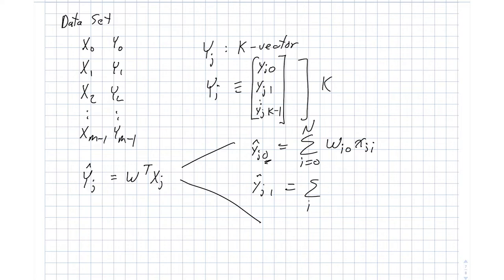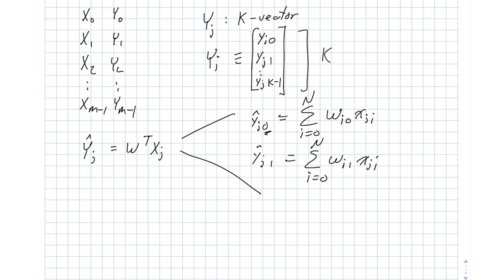And yj1 is a summation from 0 to n of wi1 xji, and on down the line until we get down to the bottom element here. So hopefully it's becoming clear that this vector matrix notation is actually quite convenient for expressing all of the stuff here on the right-hand side. It's a nice compact representation of this.